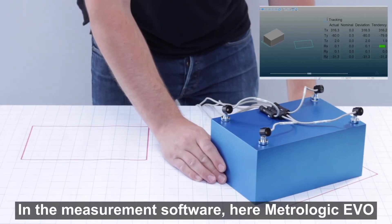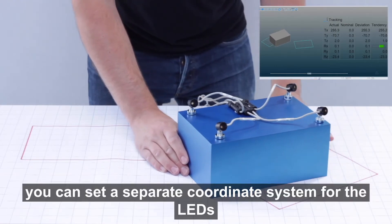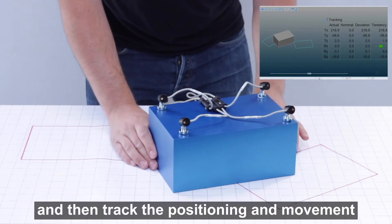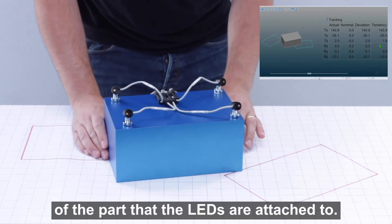In the measurement software, here in Metrologic Evo, you can set a separate coordinate system for the LEDs and then track the positioning and movement of the part that the LEDs are attached to.